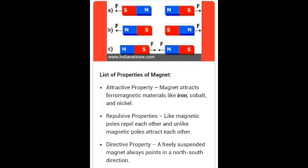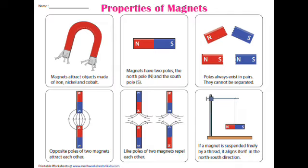And the last one is the directive property. A freely suspended magnet always points in a north-south direction. These properties are seen in a magnet, as we can see clearly.